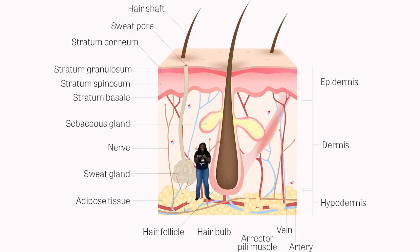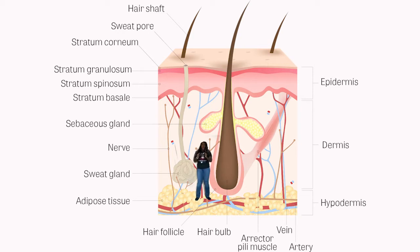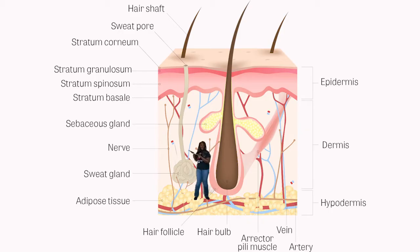The sweat gland, also known as the sudoriferous gland, is a type of exocrine gland. 'Exo' means outside, so when you're working out, the exocrine gland produces sweat that is released outside of the body through the sweat pore. The sweat gland pictured here is called a merocrine sweat gland because the sweat is released on the surface of the body.